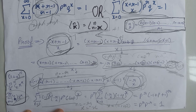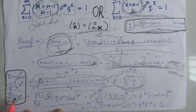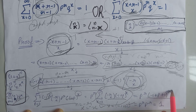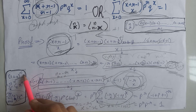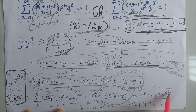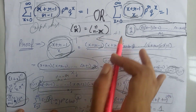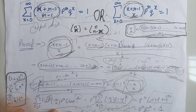On putting these values into the binomial expansion, we get the result of this whole term. On cancellation, we are left with p^(minus r). Cancelling again, we get only 1 as our answer — that is, we have proved that the summation of the PMF of the negative binomial distribution is equal to 1.